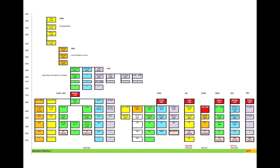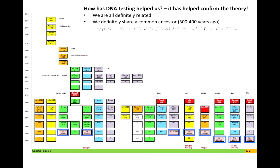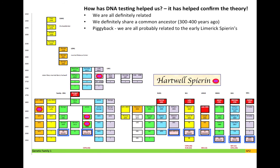Here is a pictorial representation of seven family trees: the first six are matching and the last is not. People shown in blue are those who took the test; people in red represent the brick walls in each branch. Before those brick walls we have the early Limerick Spearins, then in orange the London Sperings, and in yellow the Cambridge Sperings. DNA has confirmed the theory: we are all definitely related, sharing a common ancestor within the last three to four hundred years, and the unusual Hartwell–Spearin surname combination still visible in several families today allows us to piggyback back to the early Limerick Spearins.